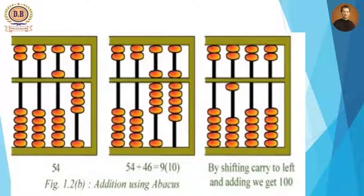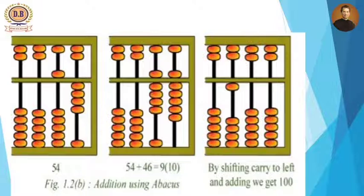Please look at the third picture. In that third picture, by shifting the carry to the left and adding, we get 100. The last two rows have no number present, and in the third section, only one bead is shifted against the divider, which represents 100.